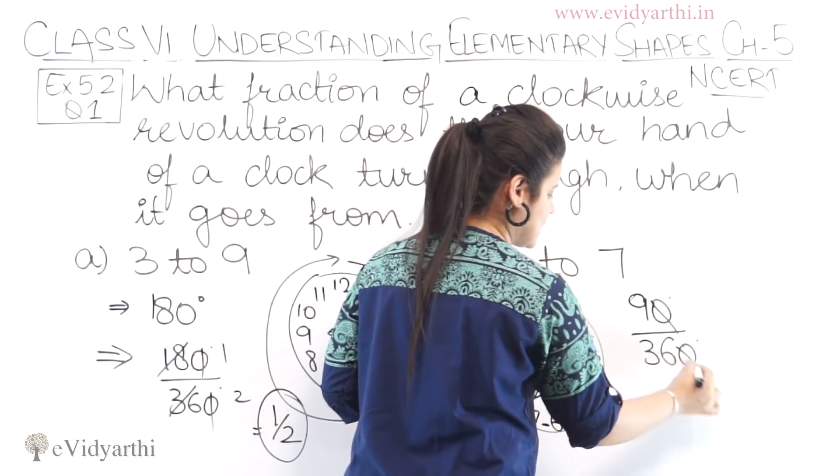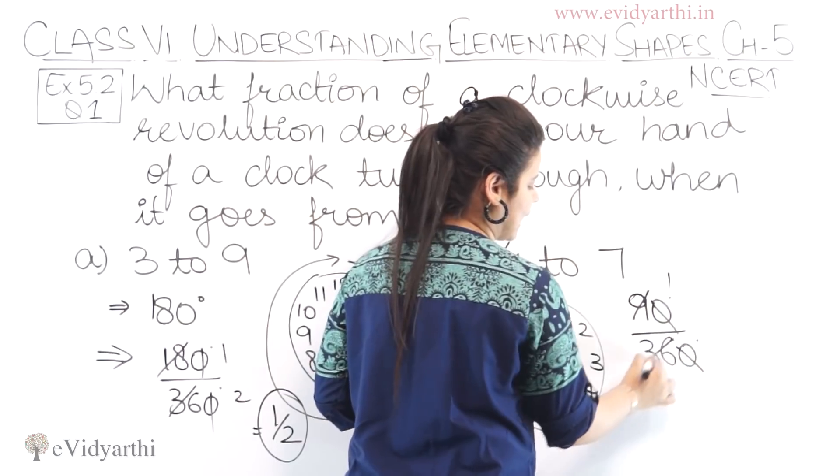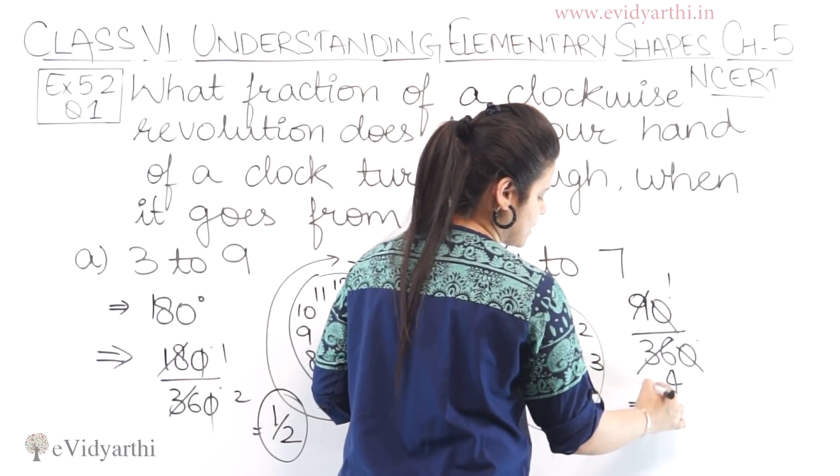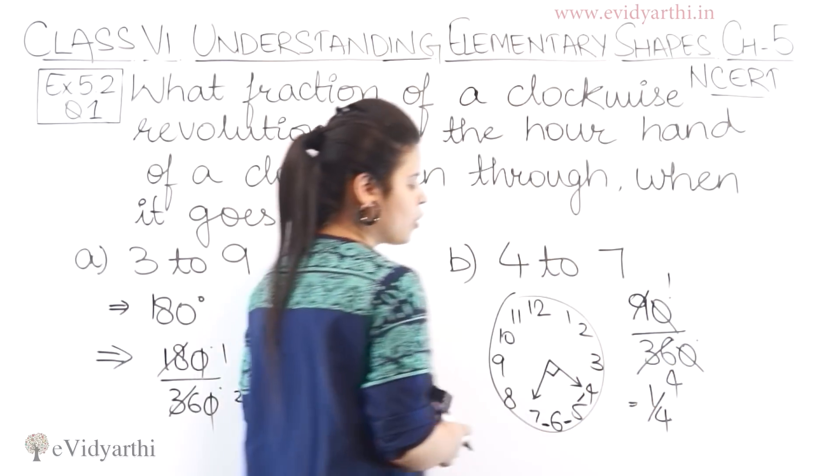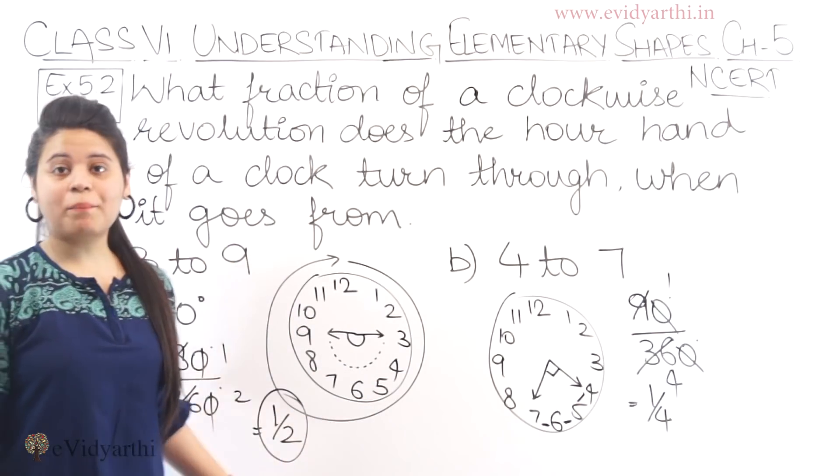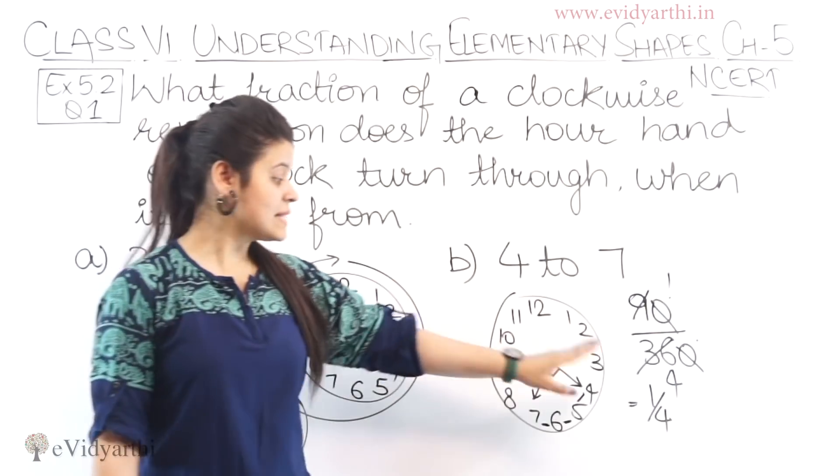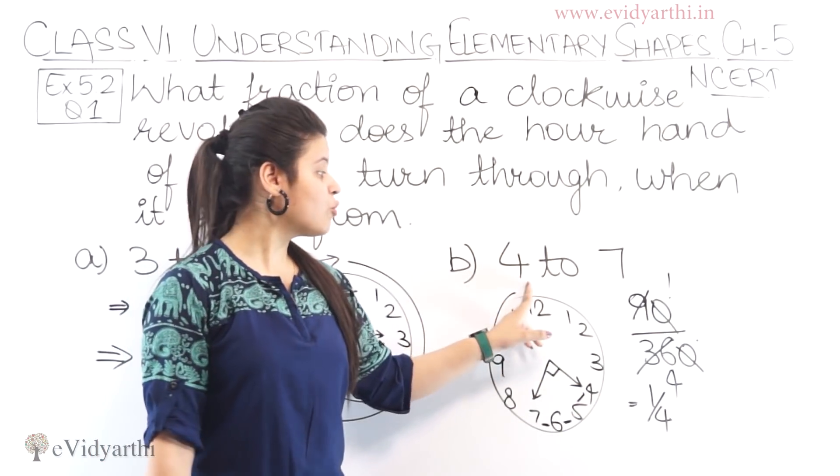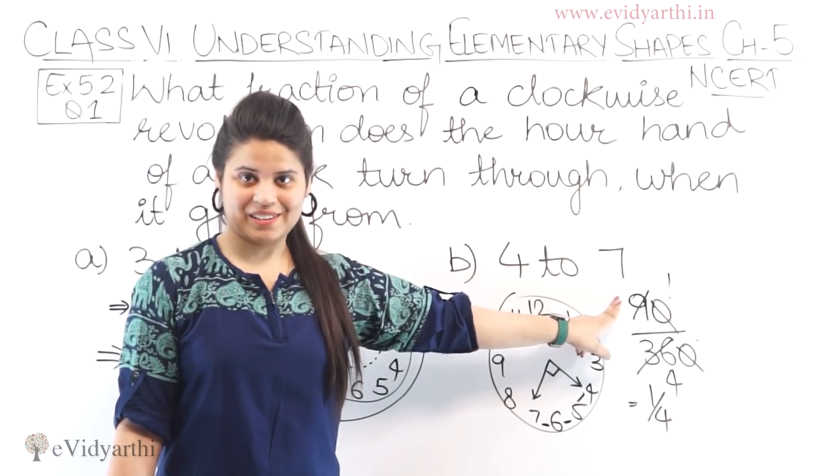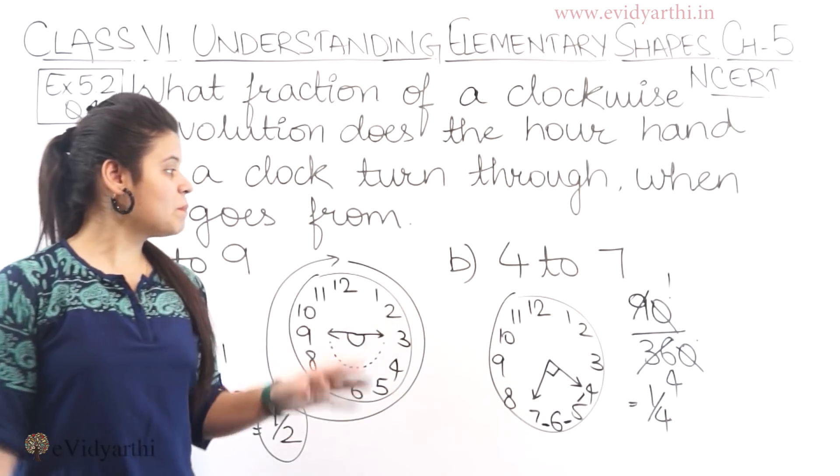it will be 90 degree upon 360 degree. Correct? Then, 0 se 0 cancel. 9 to 1, 9. 9 to 4, 36. So, we have 1 upon 4. The first fraction was 1 upon 2. Now we have the fraction 1 upon 4. Means, 1 upon 4 revolution when it goes from 4 to 7. Okay? So, this was the second part.